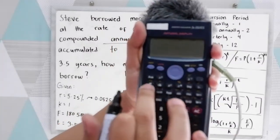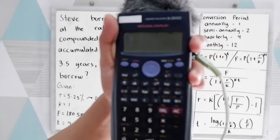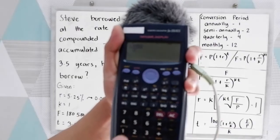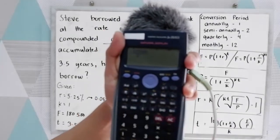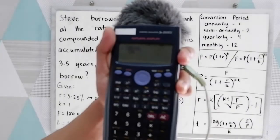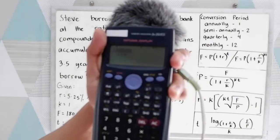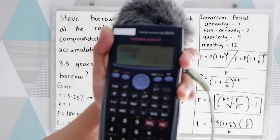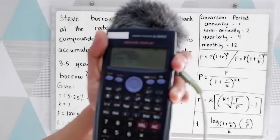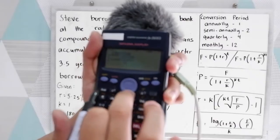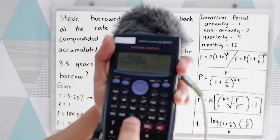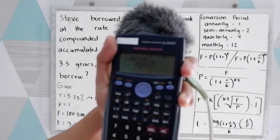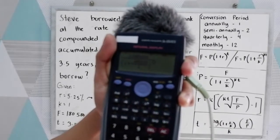So find this function in your calculator. Then type 180,500 or insert that. Then parenthesis 1 plus, then the function 0.0525 over 1. Then close parenthesis, raised to 1 times 3.5 is 3.5.